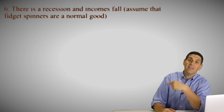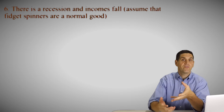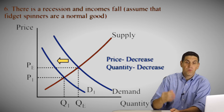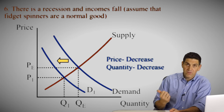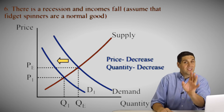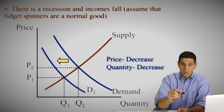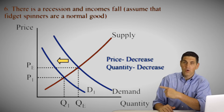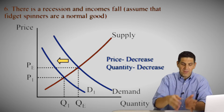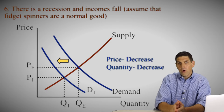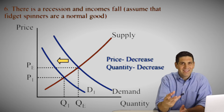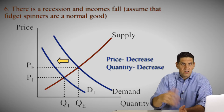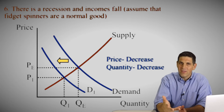Scenario six talks about income and a recession — those are demand shifters because income is a shifter of demand. In this case, fidget spinners are a normal good, which means when incomes fall, people buy less of them. So demand falls, shifts to the left, price goes down, quantity goes down. Remember, there's a difference between a normal good and an inferior good. An inferior good is the opposite: when incomes fall, people buy more — like top ramen. Your teacher on a test will tell you if something is a substitute, a complement, a normal good, or an inferior good — you shouldn't have to guess.